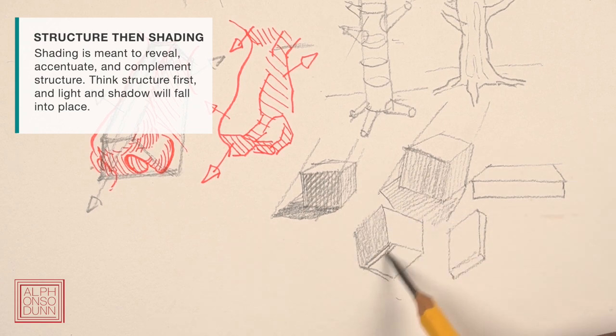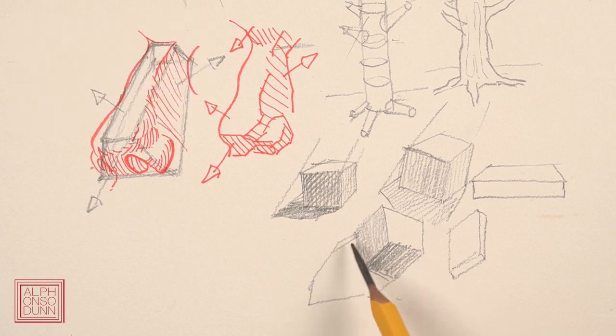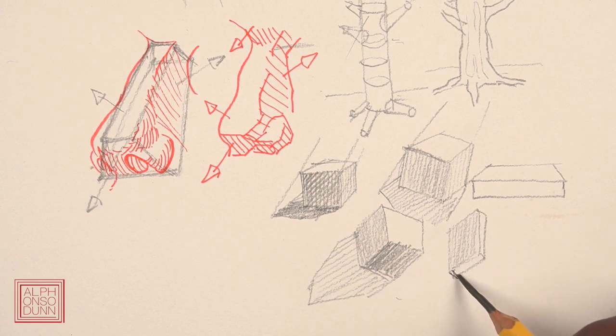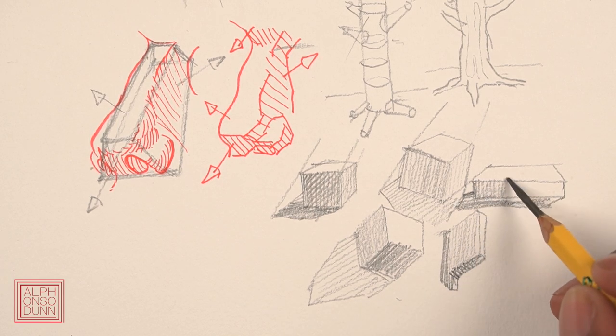So ask yourself, is the form a block or block-like? Is it rounded? Is it cylindrical? And so on. So you realize that understanding structure first makes shading a lot easier.